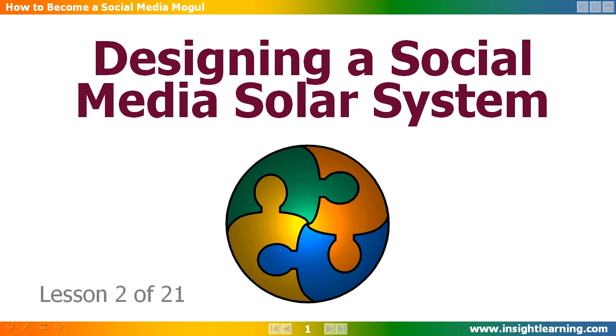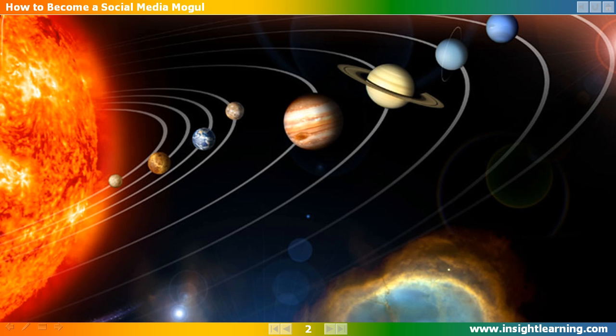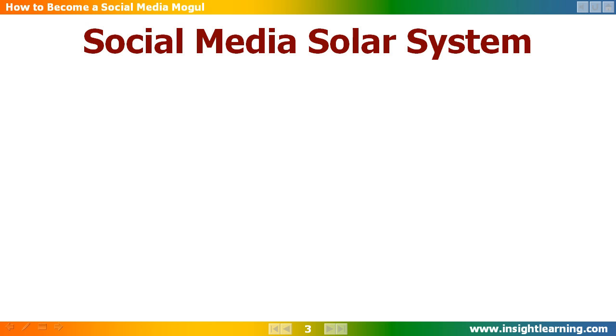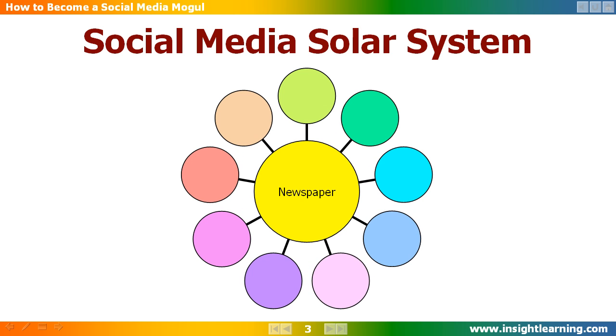Designing a Social Media Solar System. This diagram outlines a social media solar system. It shows a central orb surrounded by a number of orbiting satellites.